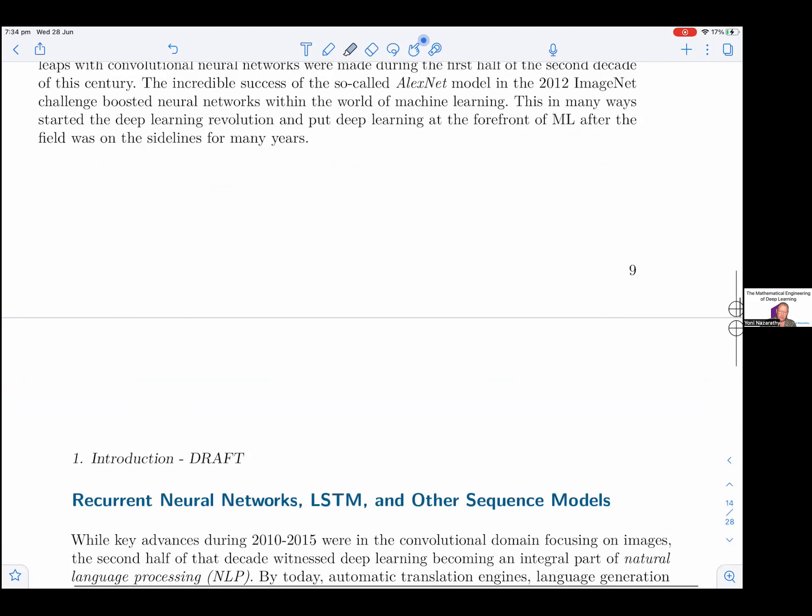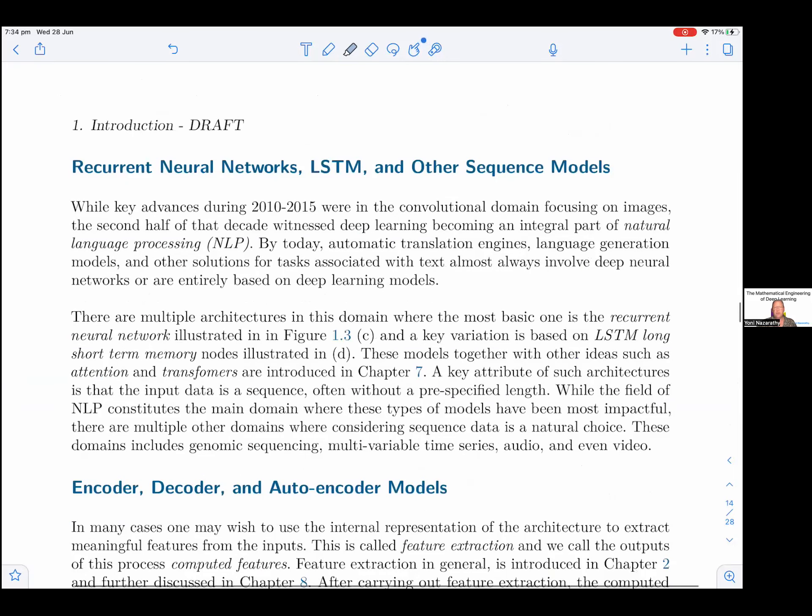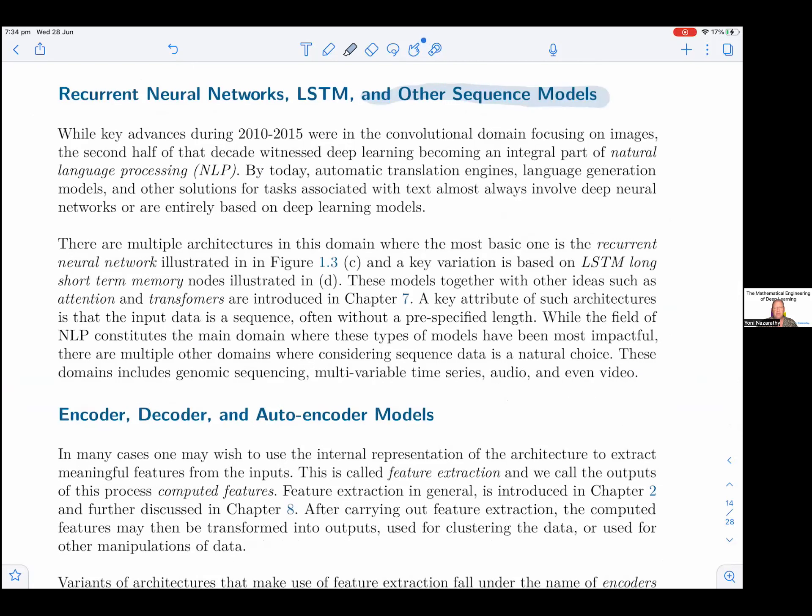Recurrent neural networks and other sequence models. While key advances during 2010 through 2015 were in the convolutional domain focusing on images, the second half of that decade witnessed deep learning becoming an integral part of natural language processing, NLP. By today, automatic translation engines, language generation models, and other solutions for tasks associated with text almost always involve deep neural networks or are entirely based on deep learning models.